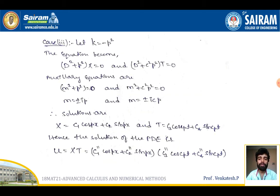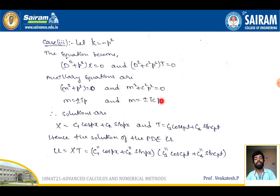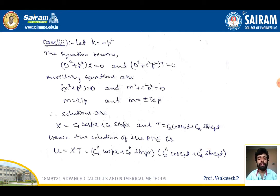Case 3: k is negative, so let k = −p². Replacing gives (D² + p²)X = 0 and (D² + c²p²)T = 0. The auxiliary equation m² + p² = 0 gives complex roots m = ±ip, so X = c₁cos(px) + c₂sin(px). For T, m = ±icp, giving T = c₃cos(cpt) + c₄sin(cpt). Therefore u = (c₁cos(px) + c₂sin(px))(c₃cos(cpt) + c₄sin(cpt)). These are the various possible solutions of the one-dimensional wave equation.